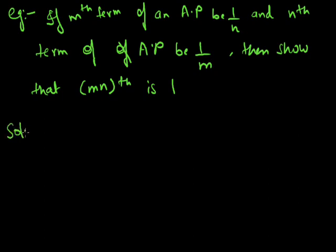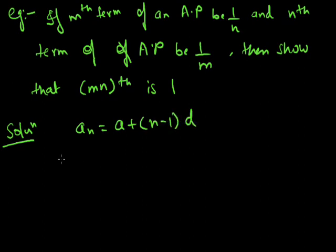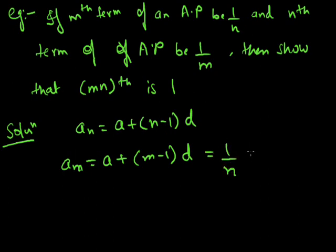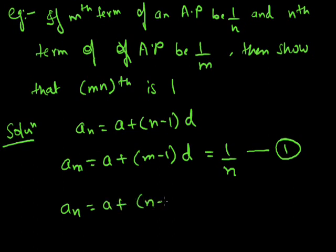How to solve it? Using the formula for the nth term of an AP: An = a + (n-1)d. Since the mth term is given, in place of n we use m, so the mth term becomes a + (m-1)d = 1/n. This is the first equation. Similarly, the nth term gives us a + (n-1)d = 1/m, which is the second equation.